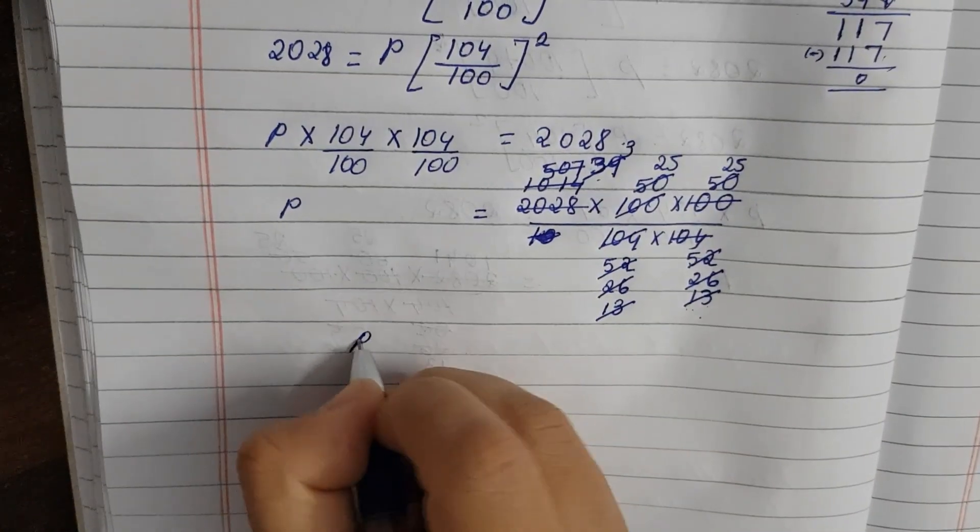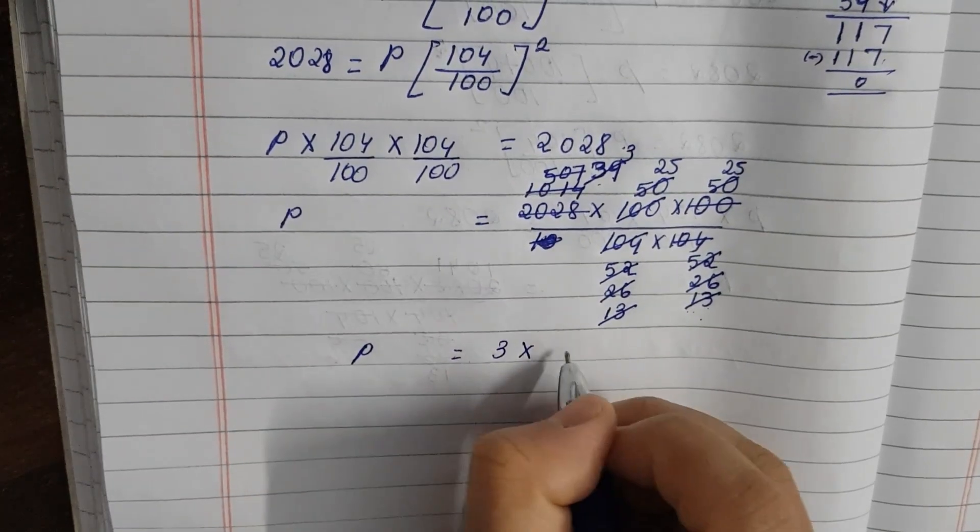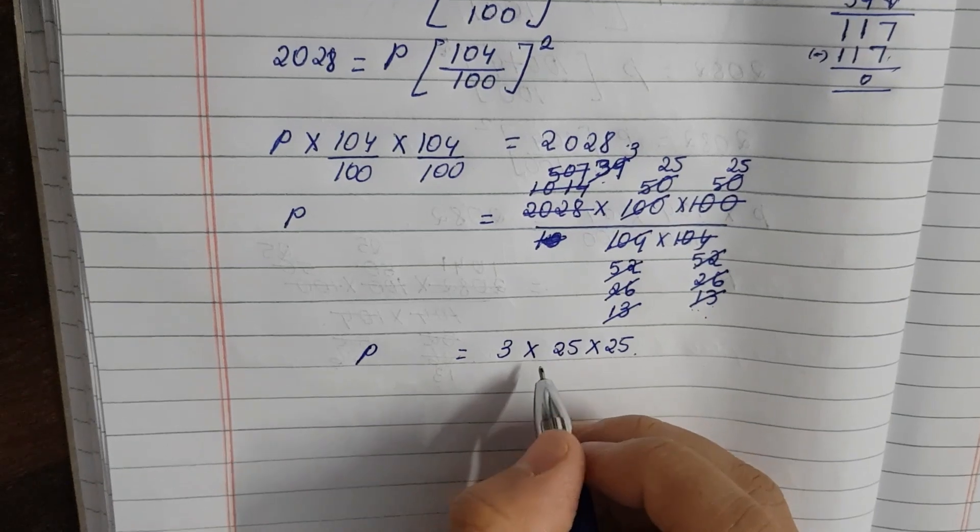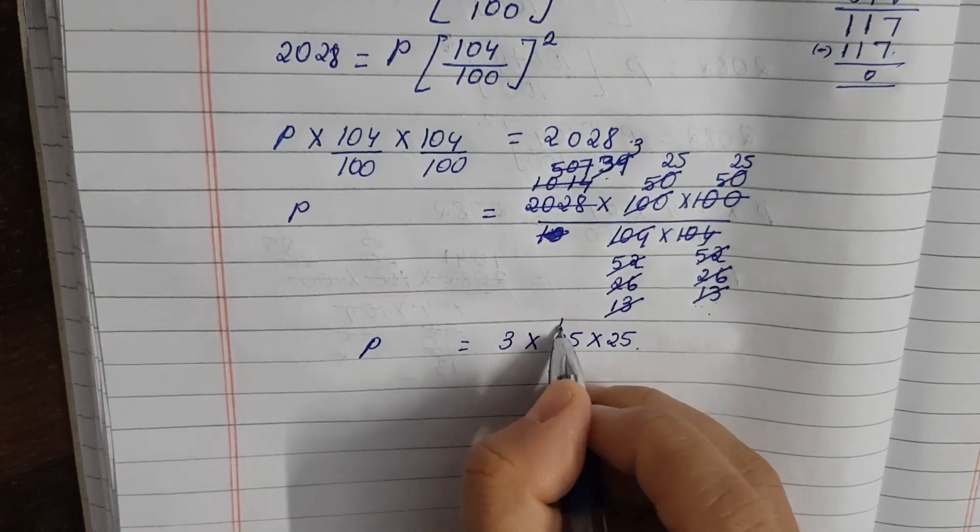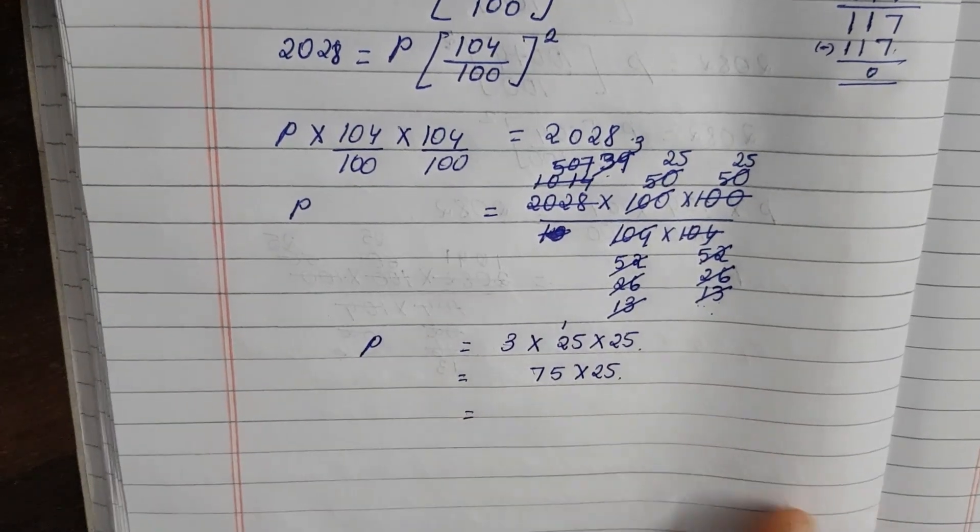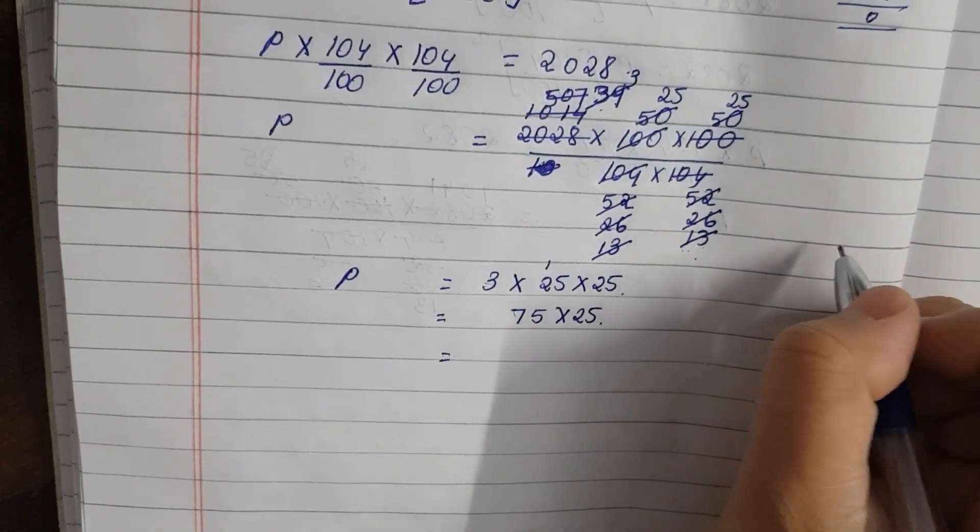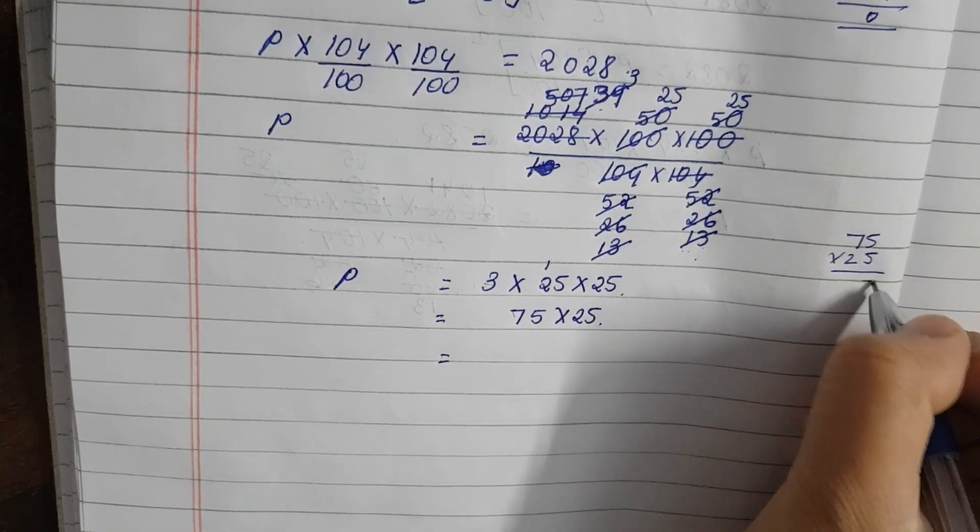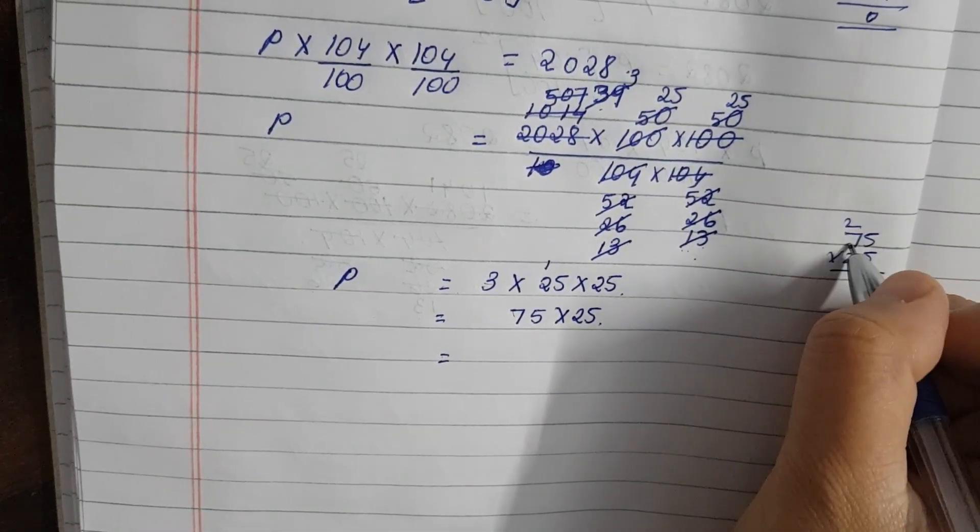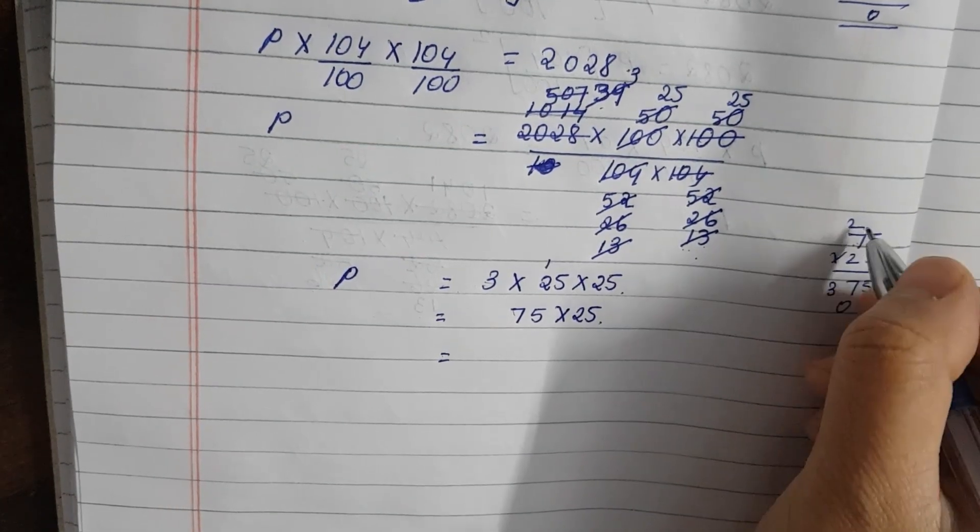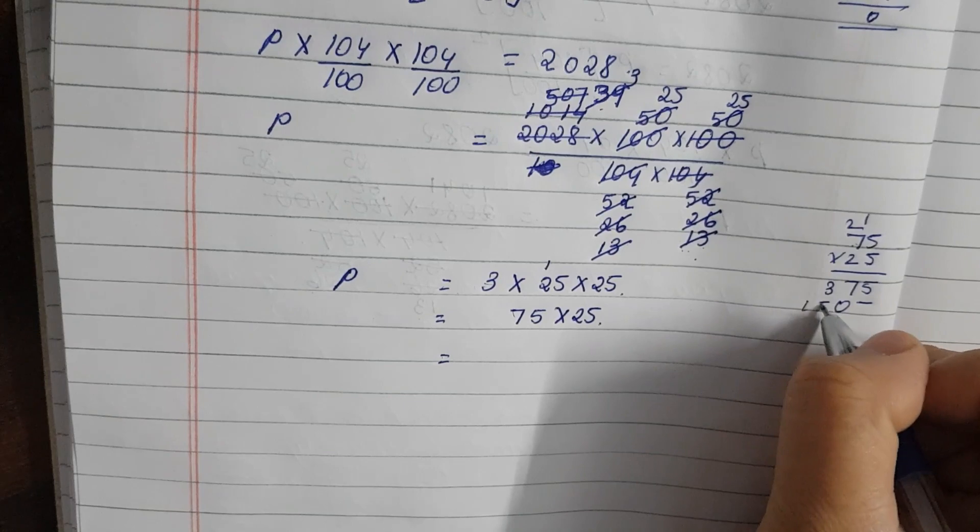So now we are going to go 3 times. So 5, 5 is 7, 75. So 75 into 25. So 75 into 25 is 75 into 25. 5, 5 is 25, 2 carry up. 5, 7 is 35, 35 plus 2, 37. 2, 5 is 10. 2, 7 is 14, 15.